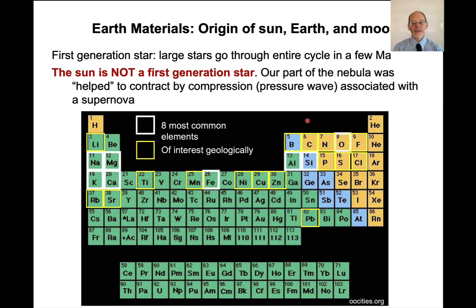So our sun is not a first generation star. The concept is that our part of the nebula, nebula is this gaseous cloud of particles of atoms, was helped to contract by compression by pressure wave associated with the supernova. Now, maybe that seems like, really? That sounds like a shaggy dog story. How do we really know this? We can actually observe this.